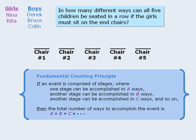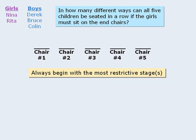Now which stage should we begin with? When dealing with questions involving the fundamental counting principle, we should always begin with the most restrictive stage. In this question, we must sit girls in chairs one and five. Since we have only two girls, these are our most restrictive stages.